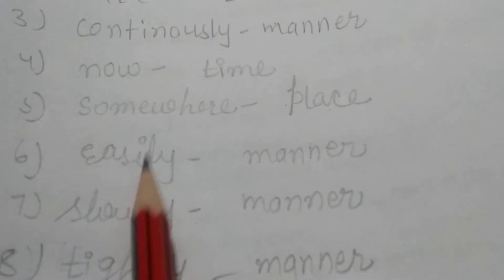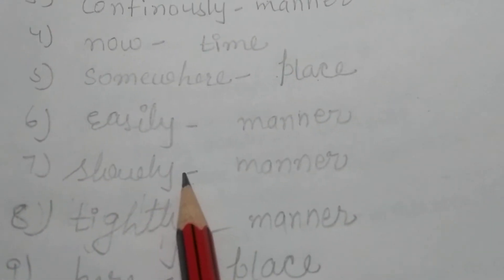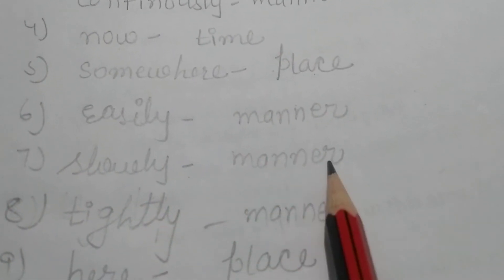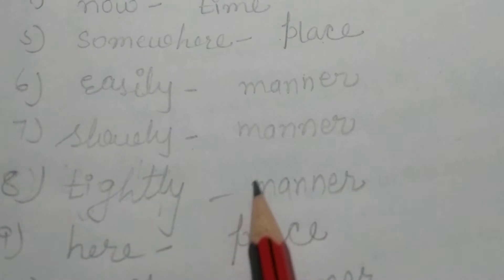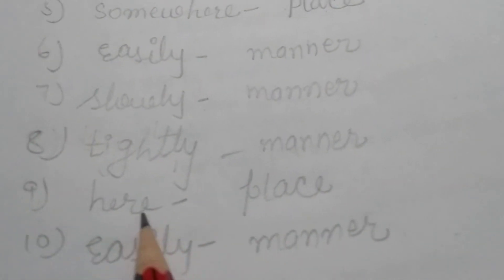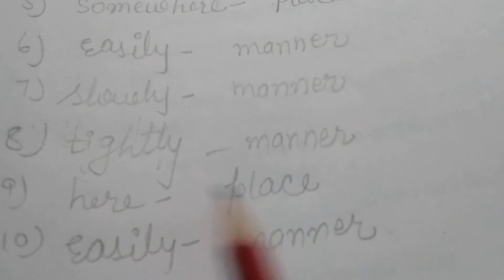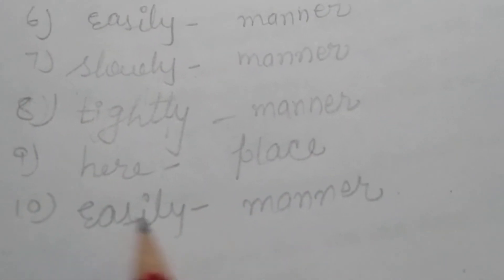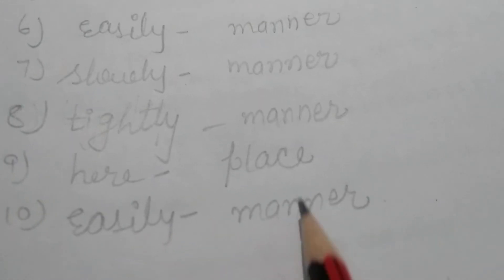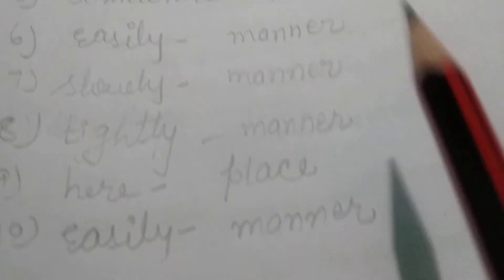Easily — adverb of manner. Slowly — adverb of manner. Tightly — adverb of manner. Here — adverb of place. Easily — adverb of manner.